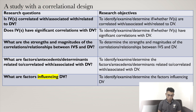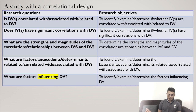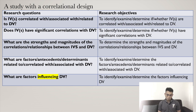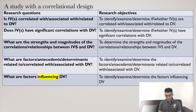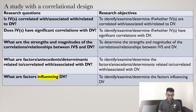The fourth one: what are the factors — and synonyms for factors include antecedents or determinants — related to, correlated with, or associated with dependent variable? The research objective is: to identify, examine, or determine the factors, antecedents, or determinants related to dependent variables. The last one: what are factors influencing dependent variable? And the objective is to identify, examine, or determine the factors influencing dependent variable.